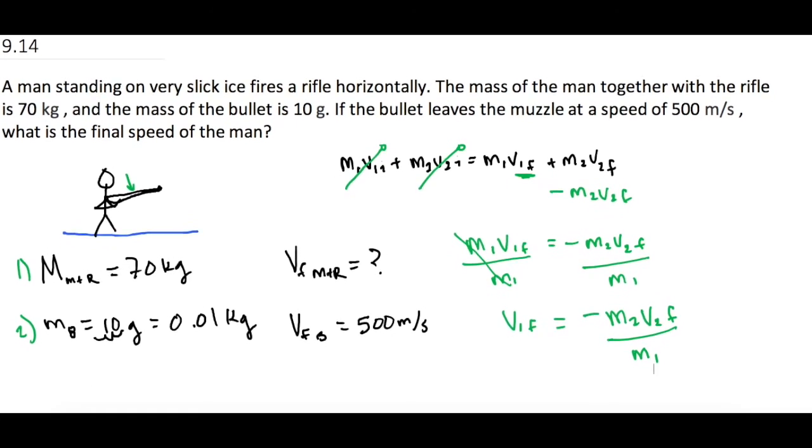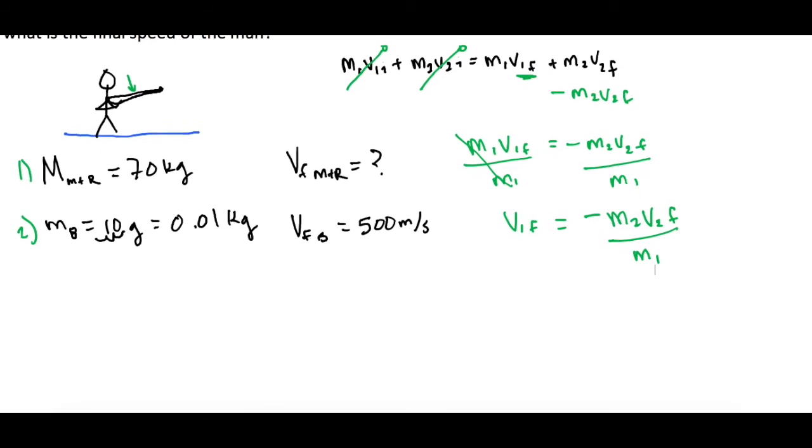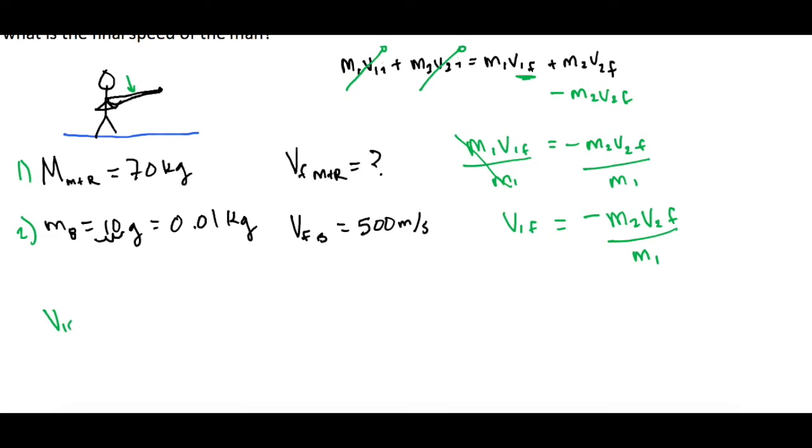So the final velocity of the guy and the rifle equals negative m₂v₂ final over m₁. So now let's plug it in. Let me slide this up, give us a little more room. So v₁ final equals negative m₂—that's the mass of the bullet—so we have 0.01 kilograms times the velocity, 500 meters per second, all divided by 70 kilograms.